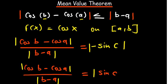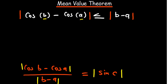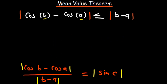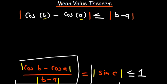We know the way a sine graph behaves. If we sketch the sine graph, the maximum point is 1 and the minimum is negative 1. Given any point c, no matter how small or large, the values are always going to be between 1 and negative 1. Therefore the absolute value of sine of c will always be less than or equal to 1. This implies the left hand side expression is also less than or equal to 1.